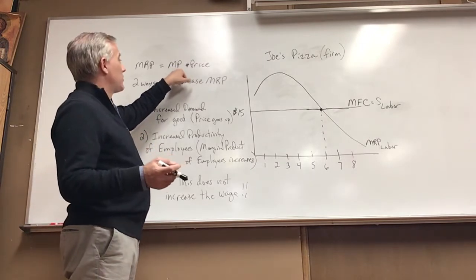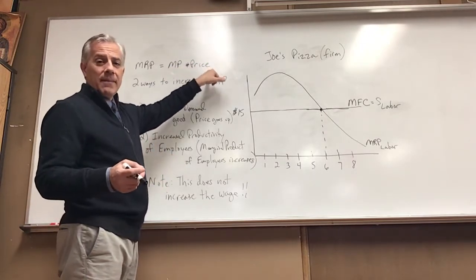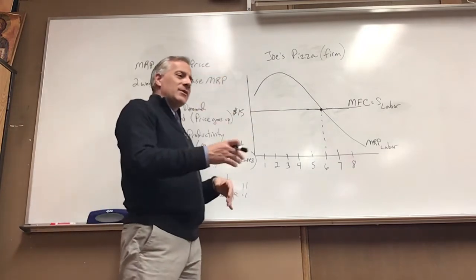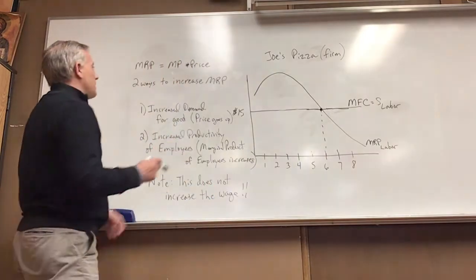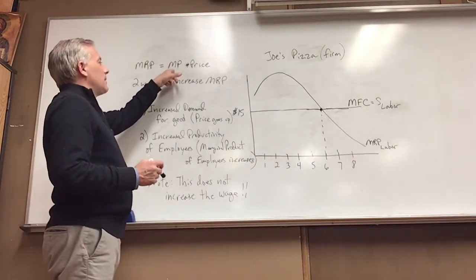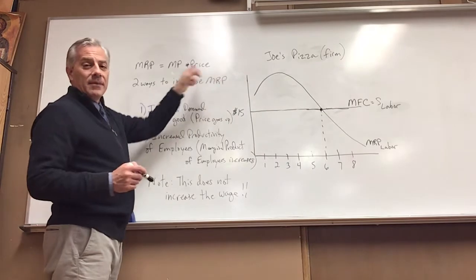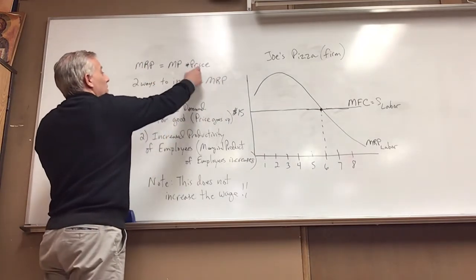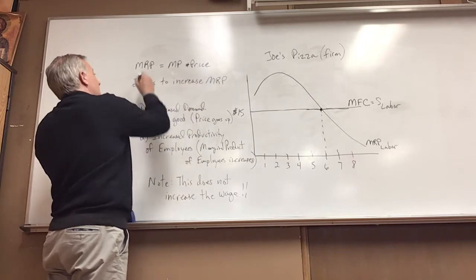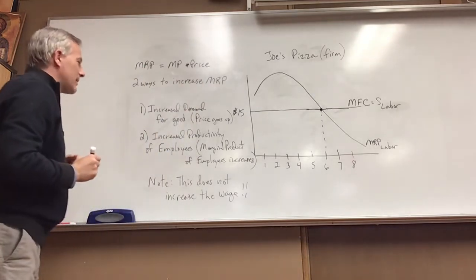First of all, marginal revenue product for our purposes is marginal product times the price. There is a more complicated situation that we're not going to be able to get into because this is a hybrid schedule year. Don't worry about that. Marginal product times the price equals marginal revenue product. So if we can increase either one of these, that increases the marginal revenue product.